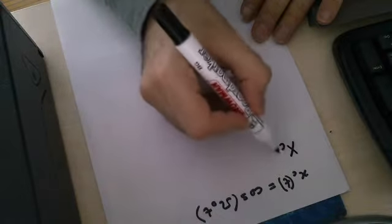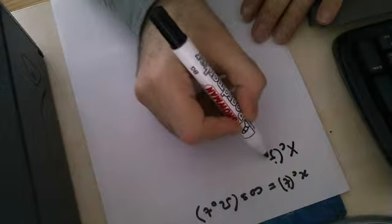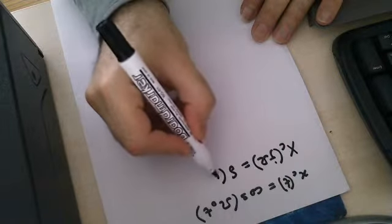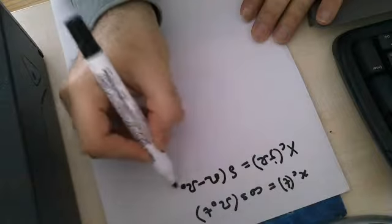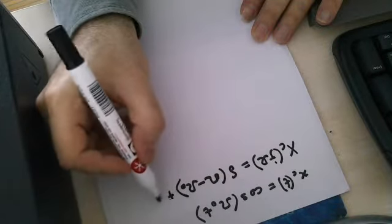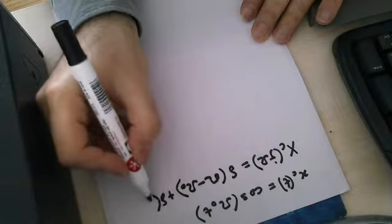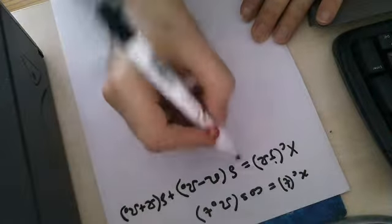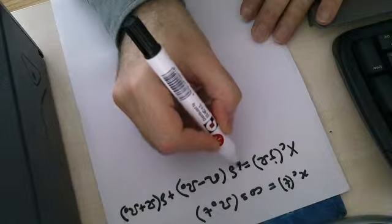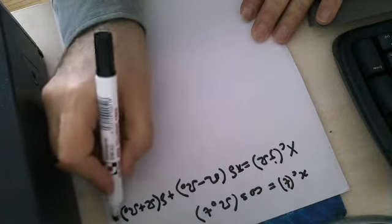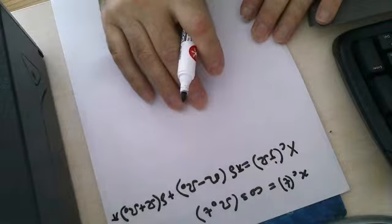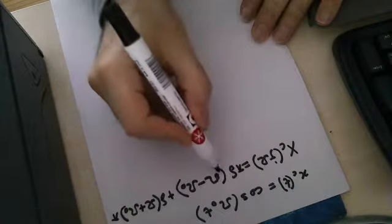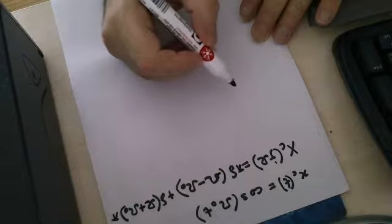We associate the following Fourier transform for this: X c of j omega equals pi delta omega minus omega 0 plus pi delta omega plus omega 0. This is the Fourier transform corresponding to x c t.